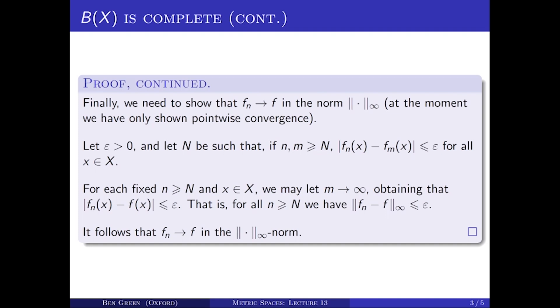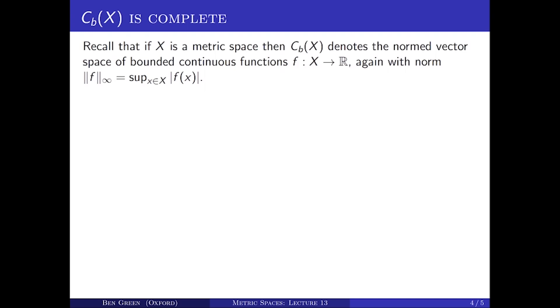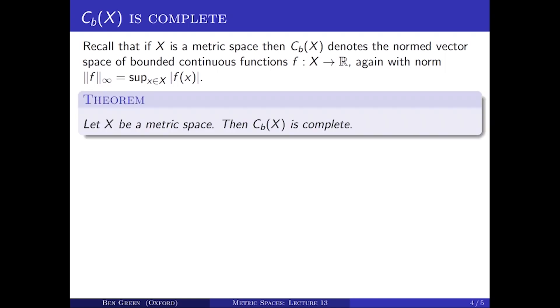Let's turn now to a discussion of continuous functions. To even make sense of what is meant by a continuous function, we need X not to be just a set, but to be a metric space. We'll also just be looking at the bounded continuous functions. This is the space we denote by C_B(X), and we have the sup-norm available to us. So if X is a metric space, then C_B(X) denotes the normed vector space of bounded continuous functions f from X to R with the sup-norm. And the theorem is that this is a complete metric space.